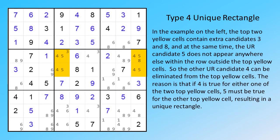In the example on the left, the top two yellow cells contain extra candidates 3 and 8, and at the same time the UR candidate 5 does not appear anywhere else within the row outside the top yellow cells. So the other UR candidate 4 can be eliminated from the top yellow cells. The reason is that if 4 is true for either one of the two top yellow cells, 5 must be true for the other top yellow cell, resulting in a unique rectangle.